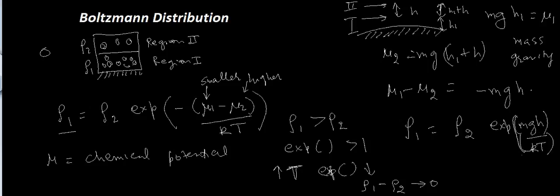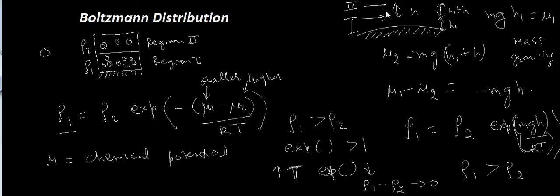Since mgh is positive, the exponential is greater than one, confirming rho1 is greater than rho2. The concept is that when you are closer to the Earth you have lower chemical potential because you are attracted to it, but when you move away your potential increases. Some particles stay in region two due to the entropic effect, which increases with temperature, but most remain in region one due to gravitational attraction. I hope this tutorial helps — if you have any questions please comment and I'll see you in the next tutorial.